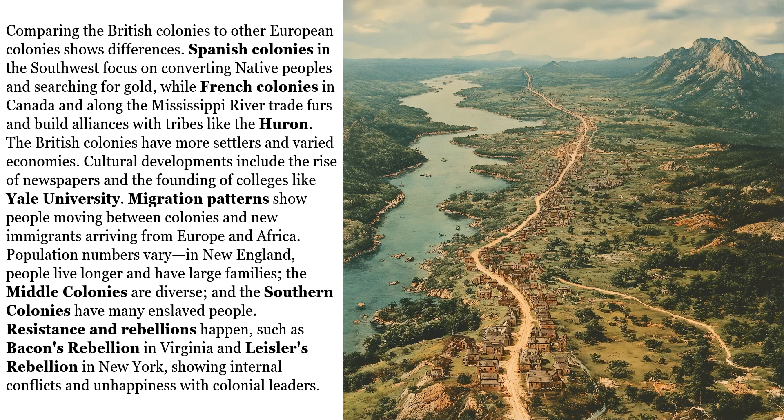Comparing the British colonies to other European colonies shows differences. Spanish colonies in the Southwest focus on converting native peoples and searching for gold, while French colonies in Canada and along the Mississippi River trade furs and build alliances with tribes like the Huron. British colonies have more settlers and varied economies. Cultural developments include the rise of newspapers and the founding of colleges like Yale University. Migration patterns show people moving between colonies and new immigrants arriving from Europe and Africa. In New England, people live longer and have large families, while the middle colonies are diverse and the southern colonies have many enslaved people.